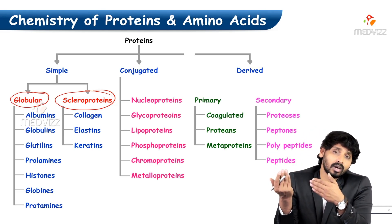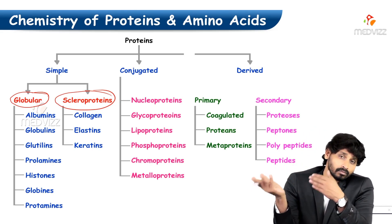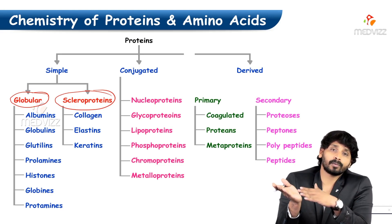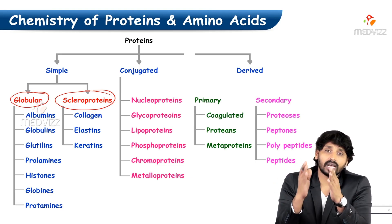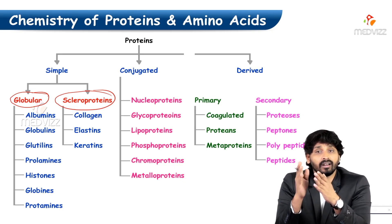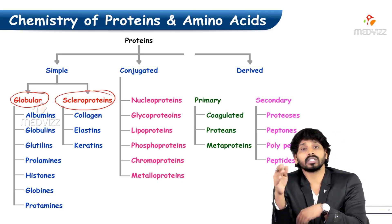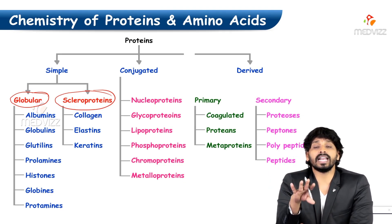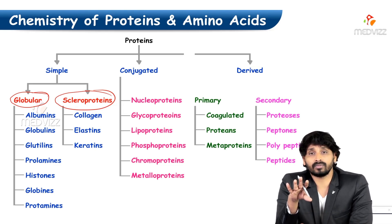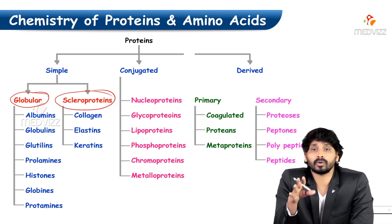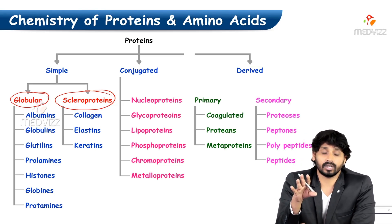Derived proteins — the third category — are again classified into primary derived proteins and secondary derived proteins. These include coagulated proteins, metaproteins, secondary proteoses, and peptones. These are essentially the degradative products of particular proteins that have been digested.